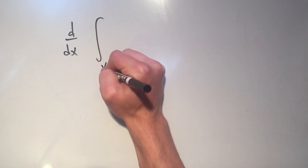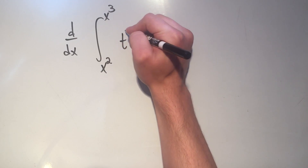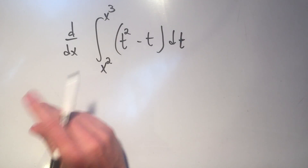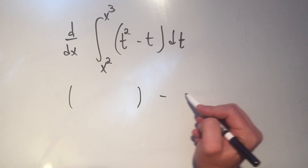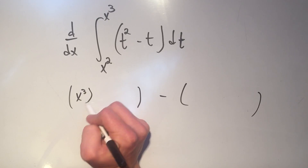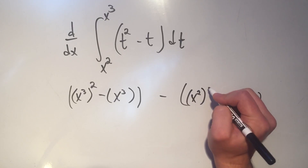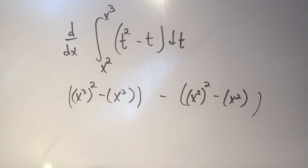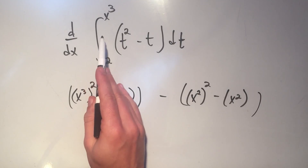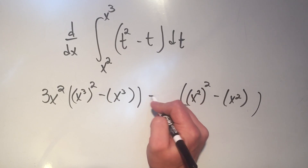Let's do the derivative of the integral from x squared to x cubed of (t² minus t) dt. I'm taking the derivative of an integral, so they go away. But by the fundamental theorem of calculus, I evaluate at the upper minus evaluate at the lower. So I plug in x cubed for each t — that's (x³)² minus x³. And I do minus the evaluation at the lower limit, plugging in x squared everywhere I see t. By the chain rule, I multiply by the derivative of x cubed, which is 3x², and by the derivative of x squared, which is 2x.